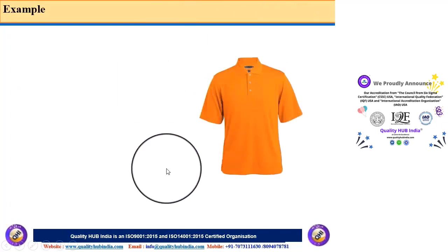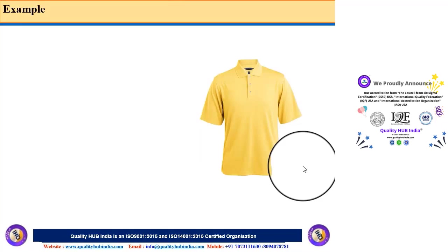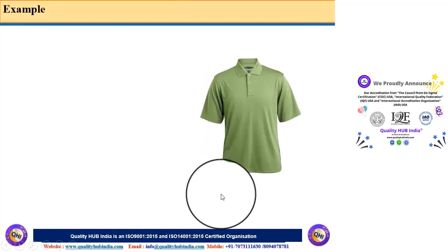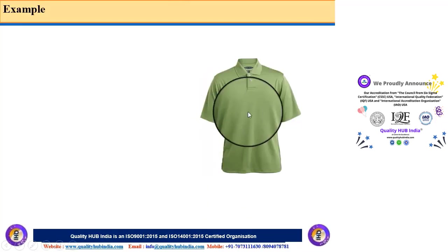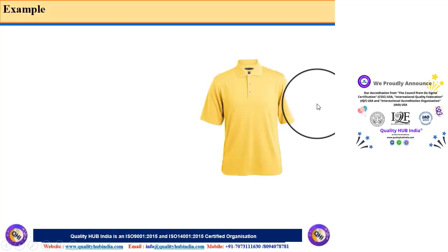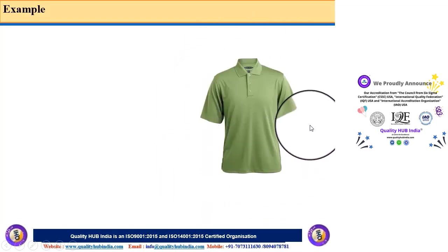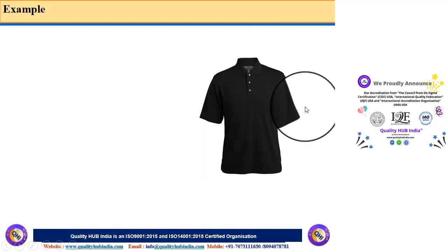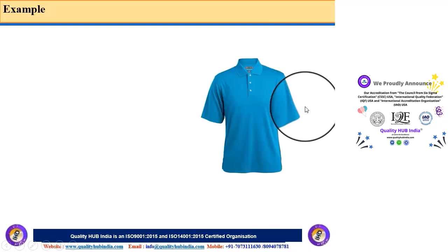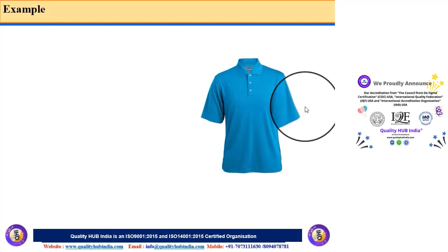The second example is a shirt. If you verify the dimensional properties of a shirt — for example, its length and width through inspection — that is verification. But when you start wearing the shirt and check the comfort and fitting, those activities would be validation.